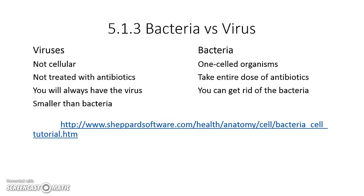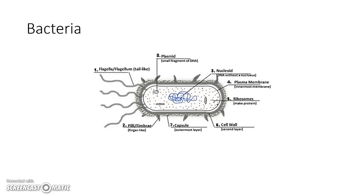Let's take a look at a picture of bacteria versus a picture of a virus. This bacteria has some of the basic components of animal and plant cells. You've learned about the difference between a cell membrane and a cell wall. Membranes are always on the inside, closest to the genetic information. In this case, number four, the plasma membrane is the membrane of the bacteria cell.